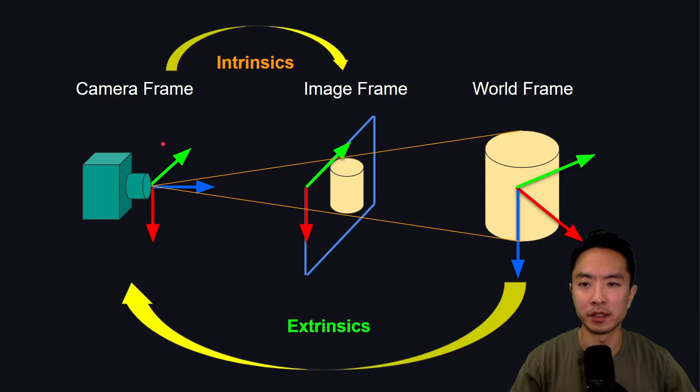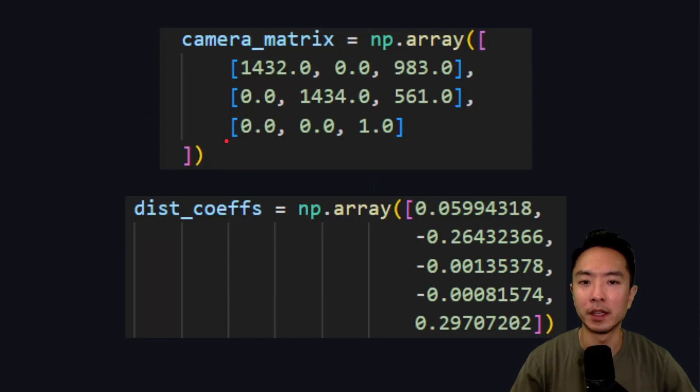What these parameters do is the intrinsics take your camera frame to your image frame, and then you have your extrinsics, which takes your world frame to your camera frame. After doing the camera calibration, these are the values I'm using for my camera matrix, as well as my distortion coefficients.